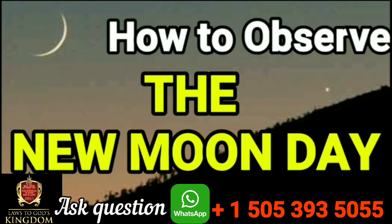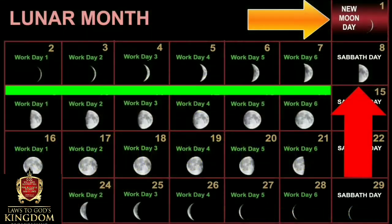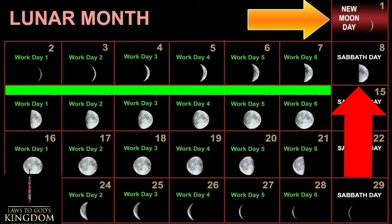They are not the same. There are three types of days. Let's start from understanding the three types of days: New Moon Day, Work Day, and Sabbath Day. The Sabbath Day is when you don't go to work, you don't cook, you worship, you rest, you don't walk around — you worship and you rest. You don't cook on the Sabbath Day, you don't travel on the Sabbath Day.